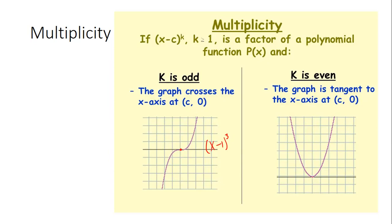This one right here, where it's tangent to the x-axis, I call it kissing the line. So when it kisses the x-axis, it has an even multiplicity. So this would look like x minus one squared. Does that make sense?